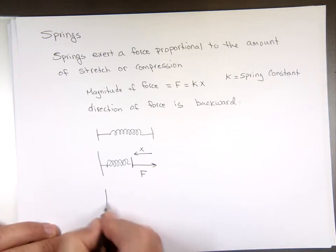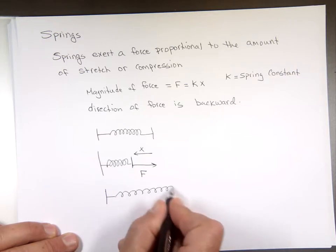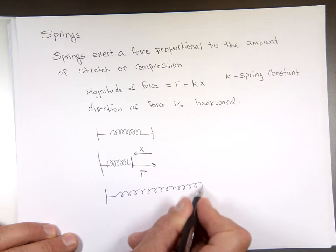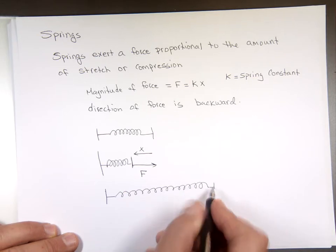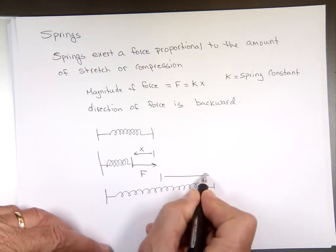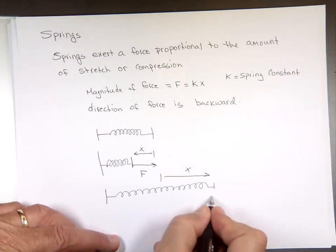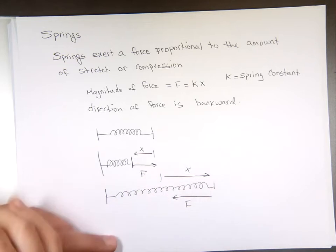And what happens when you stretch that one? If you take your hand and stretch it, stretch the spring. So you moved it this way. X was moved in that direction. And once you let go of that spring, which way is it gonna move? Backward.